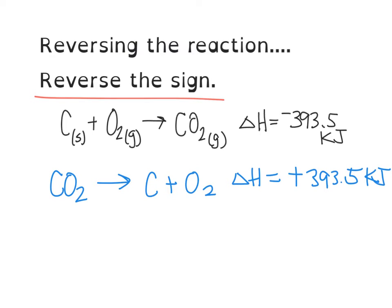The only difference is that what was a product is now a reactant. So because our ΔH here is negative and it was a product, it is now a reactant to match with our CO₂. So remember, when you reverse the reaction, you reverse the sign.